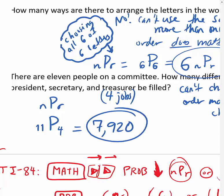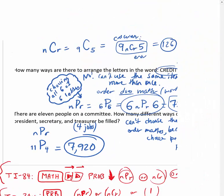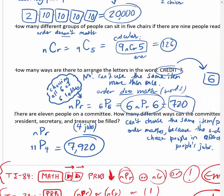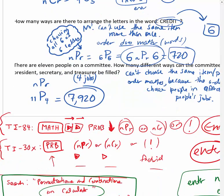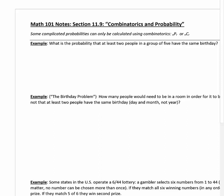I always tell students: if you're doing permutations and combinations and you get an answer that seems way too big, you're probably right - because there are always way more combinations and permutations than you think there are.